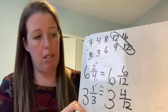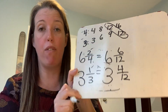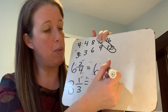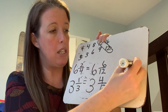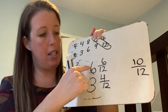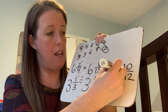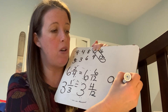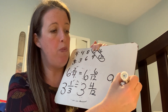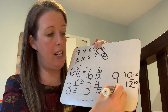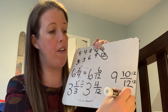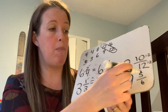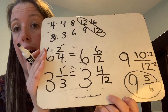I have six and six-twelfths plus three and four-twelfths. I like to always add my fractions first: six-twelfths plus four-twelfths equals ten-twelfths. Then six wholes plus three wholes equals nine wholes. So nine and ten-twelfths. But I know I can divide both numbers by two to simplify: ten divided by two is five, and twelve divided by two is six. So the simplified answer is nine and five-sixths.